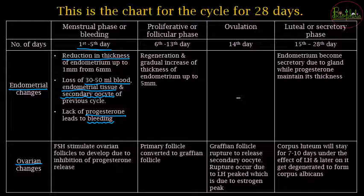Now, what changes occur in the ovary during the menstrual phase? Due to FSH (follicle-stimulating hormone), new ovarian follicles begin to develop. The inhibition of progesterone decreases because of corpus luteum degradation, and FSH starts working on new ovarian follicles for the next oogenesis.